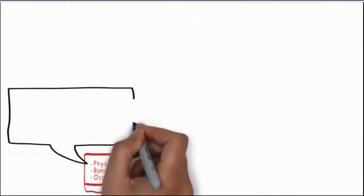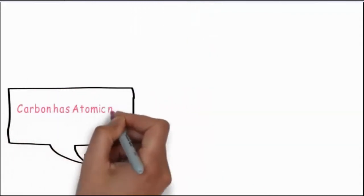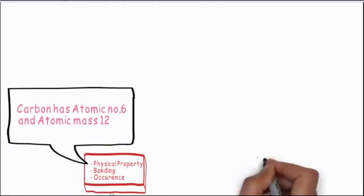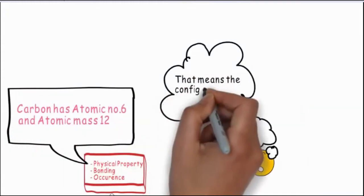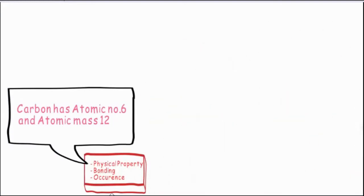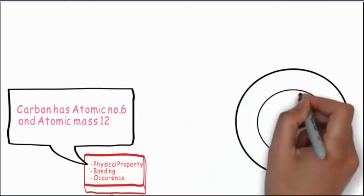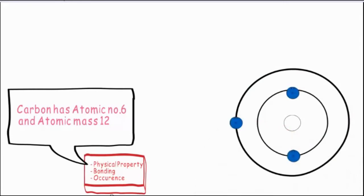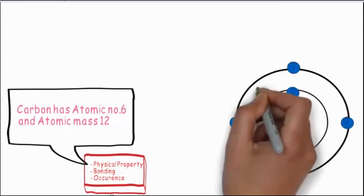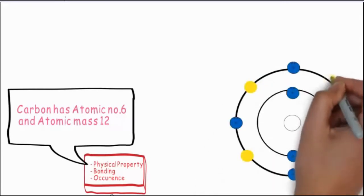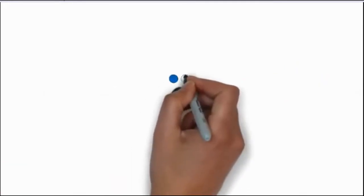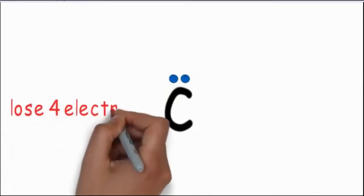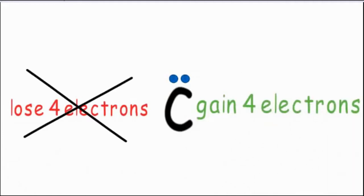Carbon has atomic number 6 and atomic mass 12. This means that carbon has a configuration of 2,4 — hence it has 2 electrons in the inner shell and 4 in the outermost. Therefore, it requires 4 more electrons to complete its octet. Carbon can either lose 4 electrons or gain 4 electrons,